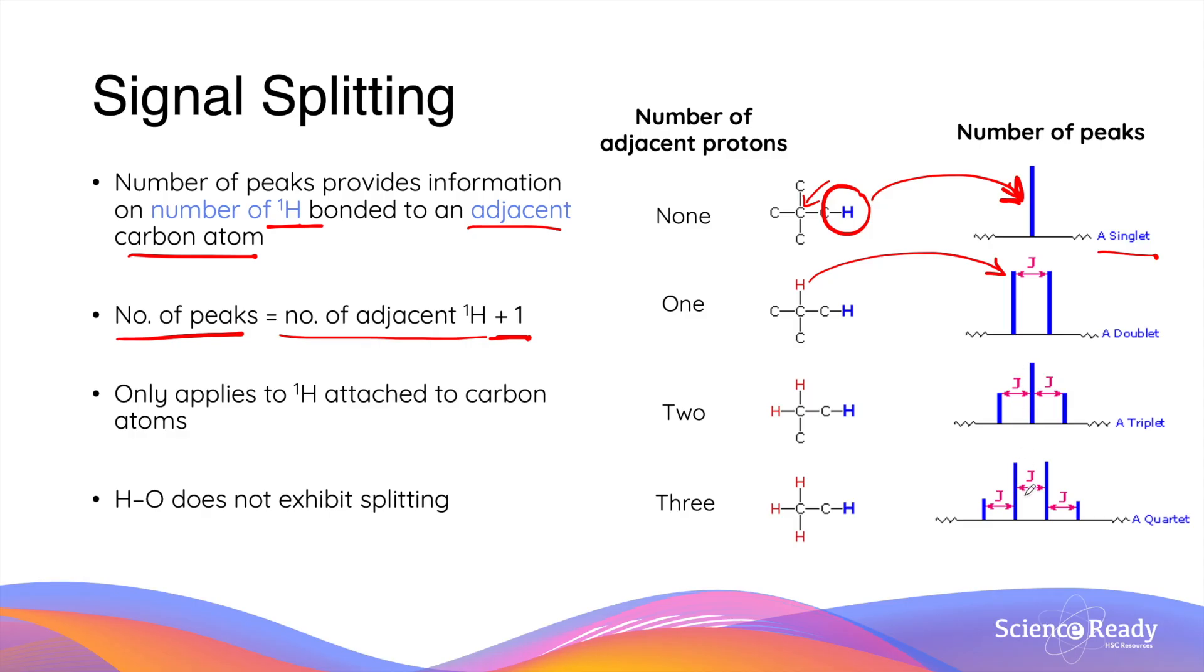All four of these examples obey the simple rule where the number of peaks you see is equal to the number of adjacent protons plus one. Signal splitting only applies to protons that's attached to a carbon atom. For example, protons that's next to an oxygen in alcohols and carboxylic acids do not exhibit splitting effect.